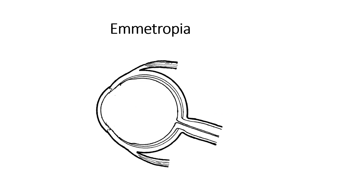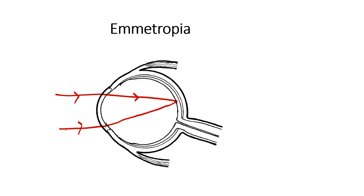Let us begin by understanding what is emetropia, or essentially the absence of a refractive error. In an emetropic eye, the parallel rays of light — that is, rays coming from a distant object — after passing through the ocular refractive media are brought to focus sharply at a point on the retina, and hence the patient experiences clear vision. If these rays are not brought to focus sharply on the retina, this would mean a refractive error.